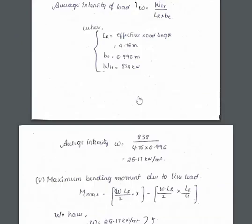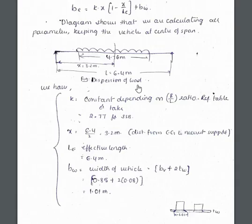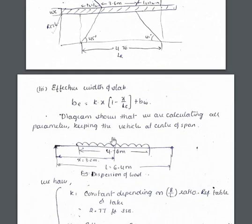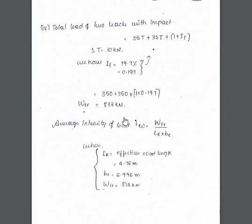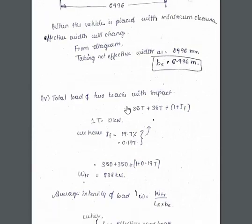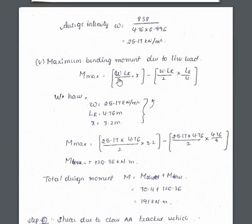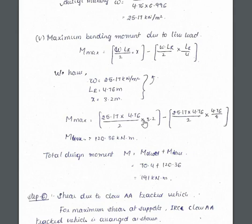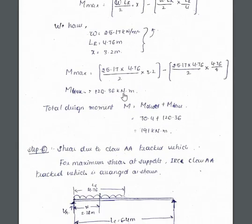That is why I have specified here maximum bending moment. The vehicle is placed again at the center like this. The parameters we have are W just calculated 25.17 kilonewtons per meter square, X is 3.2, LR effective length of the road is 4.76 meter. Substitute all the values in this equation, you will get M max as 120.36 kilonewton meter.